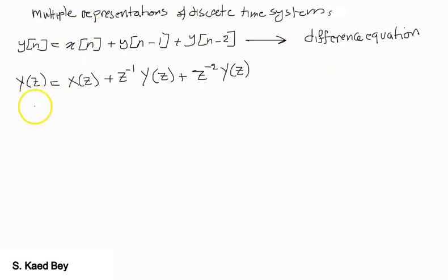Rearranging this, we can get the transfer function as y(z) over x(z) equals z squared divided by z squared minus z minus 1.